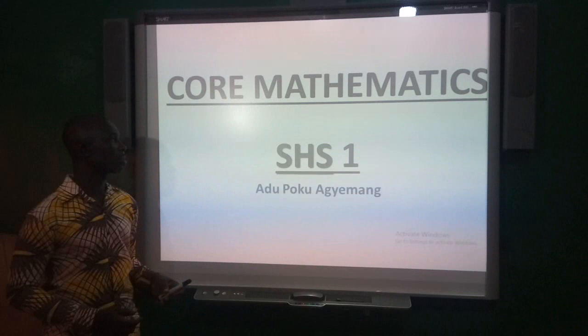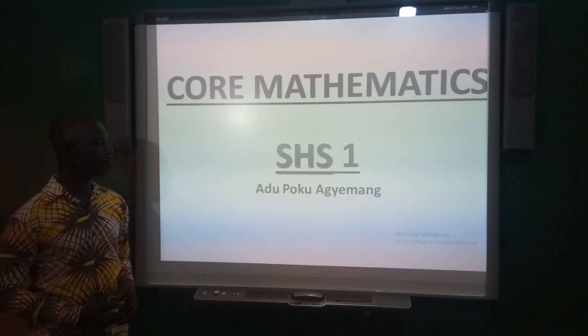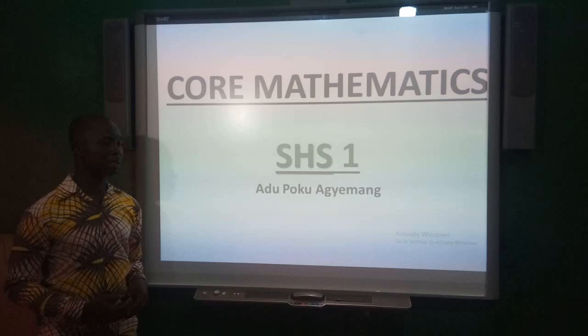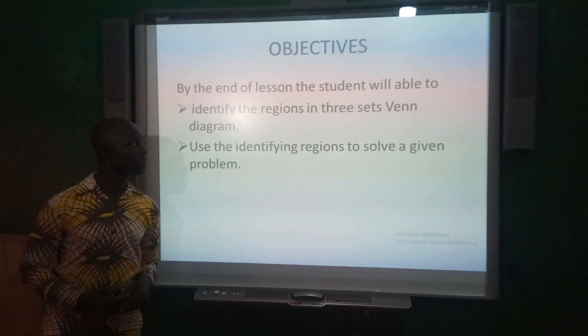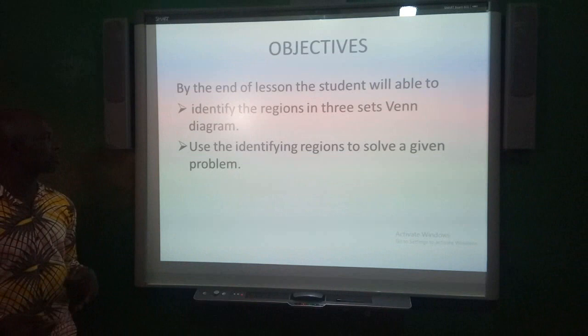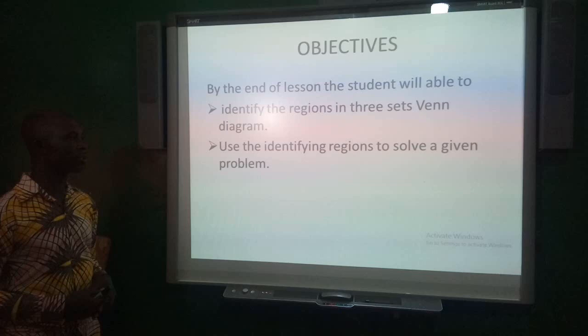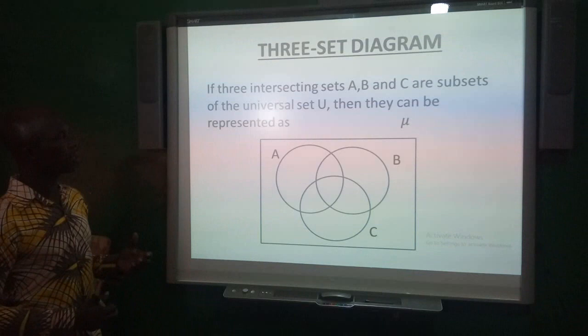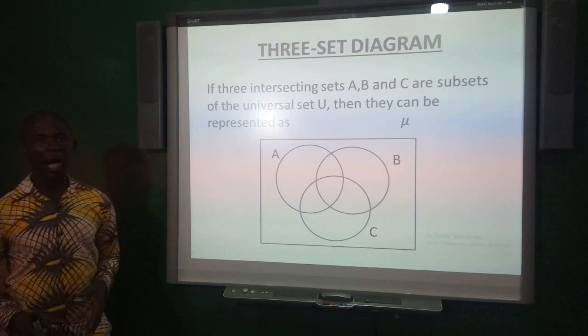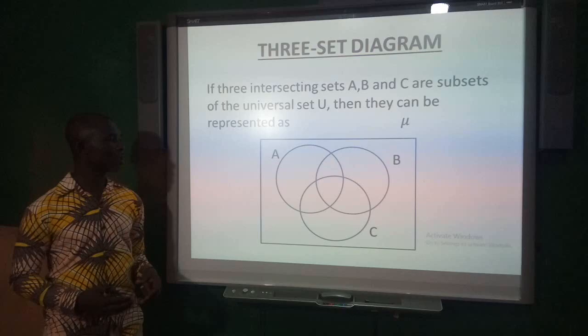Welcome to SHS1 Commerce class. In our previous lesson we discussed two set problems. This lesson we are going to continue with three set problems. By the end of the lesson the student will be able to identify the regions in a three set Venn diagram and use those identified regions to solve a given problem. Each three intersection sets A, B and C are subsets of the universal set U.